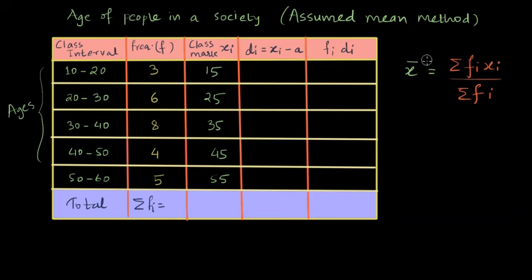Sometimes the procedure becomes complicated when the multiplication becomes complicated. And in such instances, what we do is we first assume some mean. And once we assume that mean, we find a deviation for each class mark from that mean. So the first step is to assume some mean.